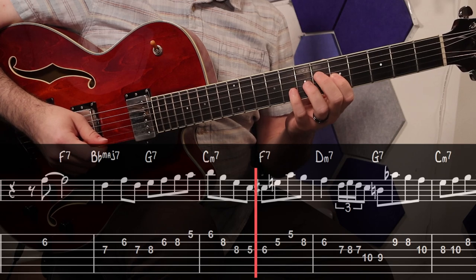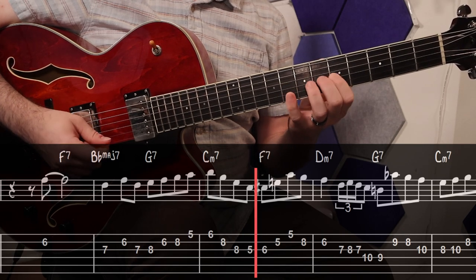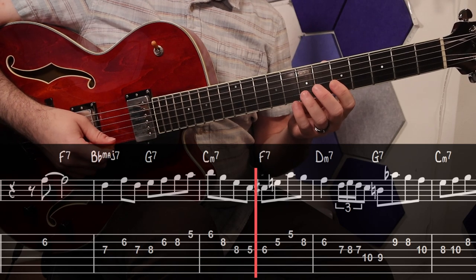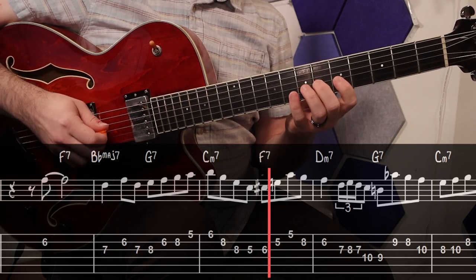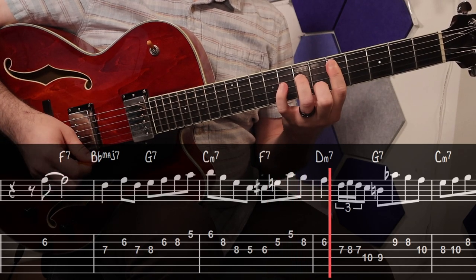This is where stuff gets really cool though. Instead of pivoting to the A that you might expect coming off of this arpeggio, he goes to a C sharp and then plays what's quite obviously an A seventh arpeggio to get to this F when we arrive at the D minor seven.